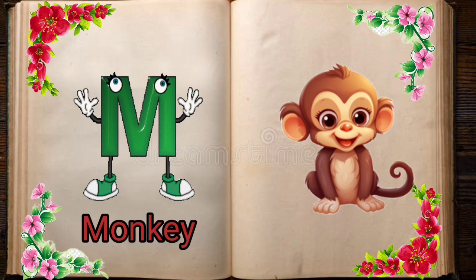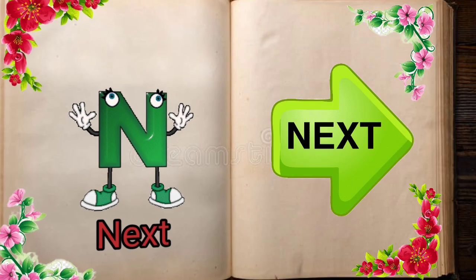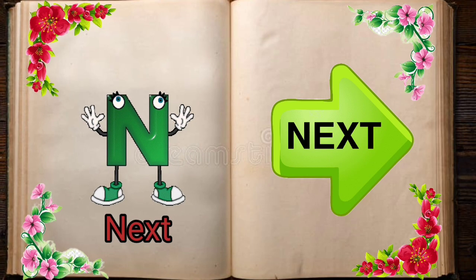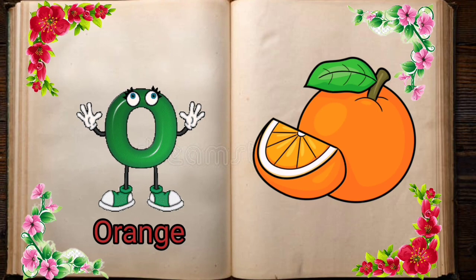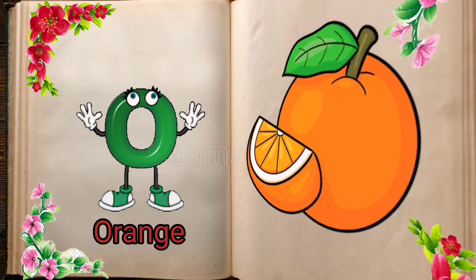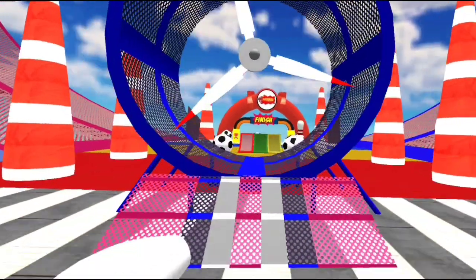M is for Mat, M-M-Mat. N is for Net, N-N-Net. O is for Orange, O-O-Orange. P is for Pet, P-P-Pet.